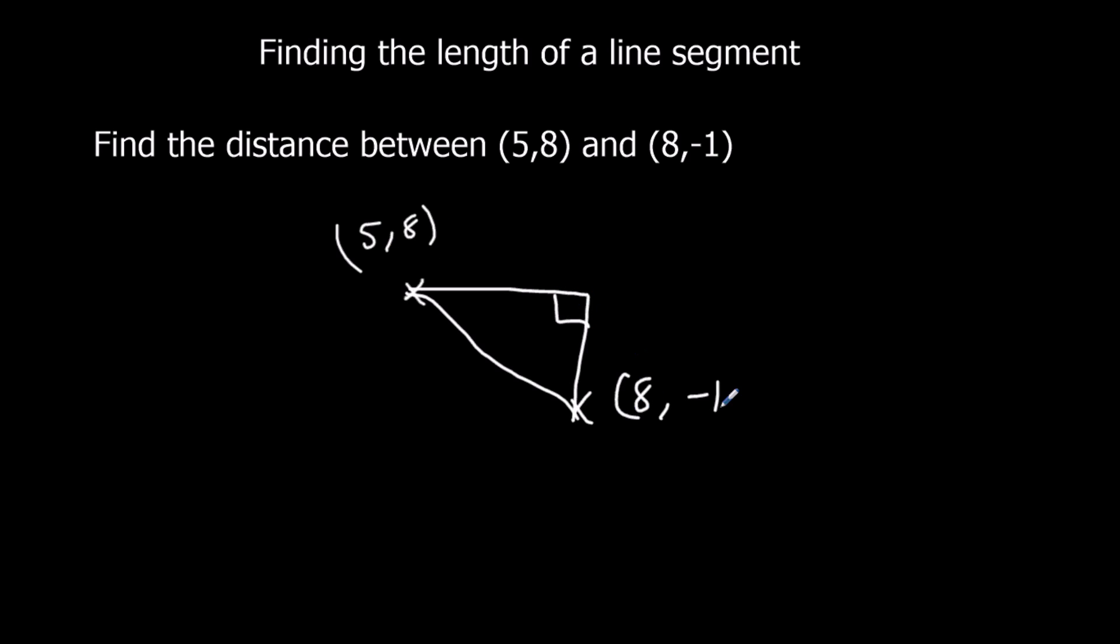So 5 to 8, how far have we gone along the x? 5 to 8, that's 3. 8 to minus 1, that's a difference of 9. It's down 9. So 3 and 9.